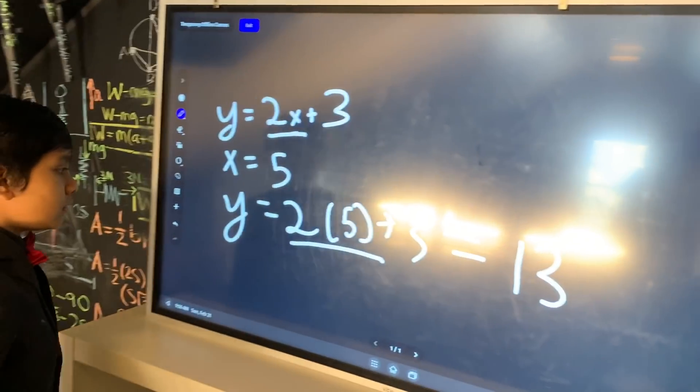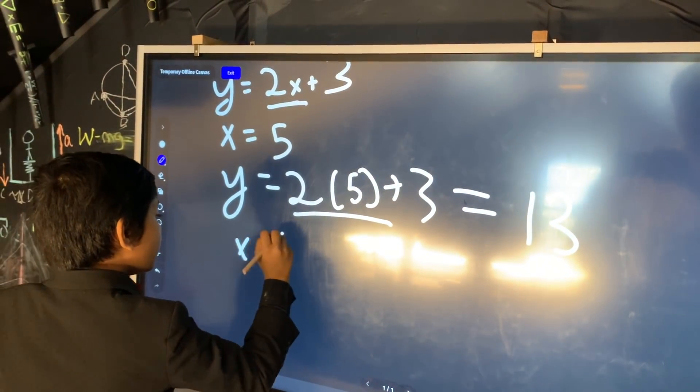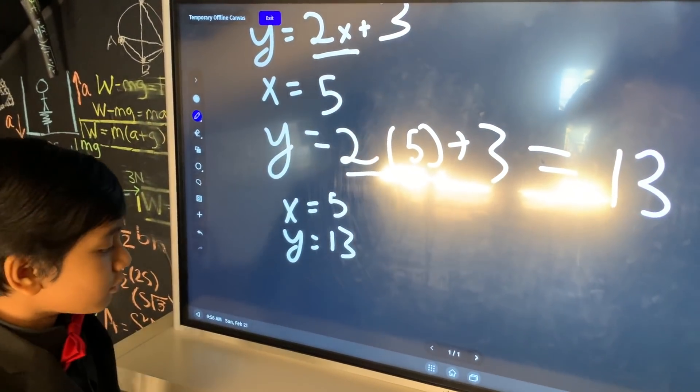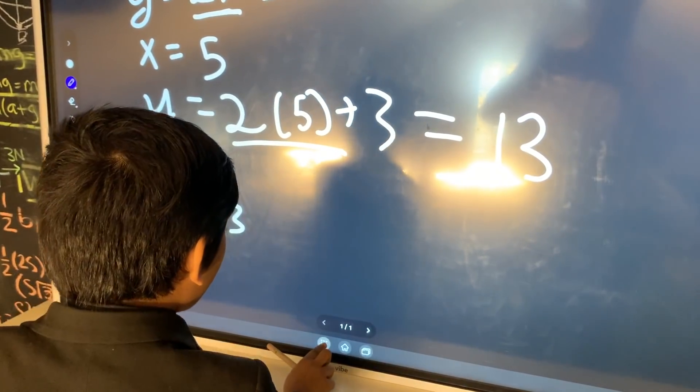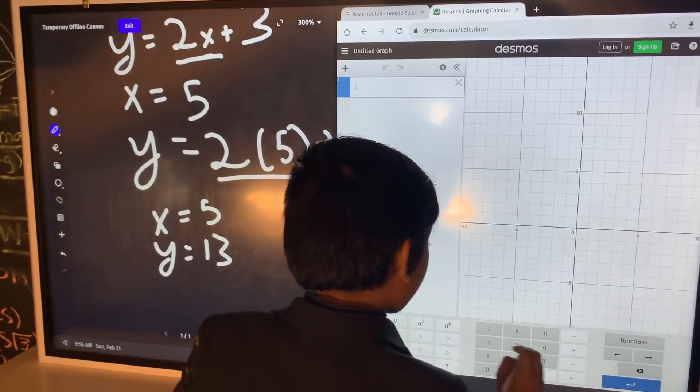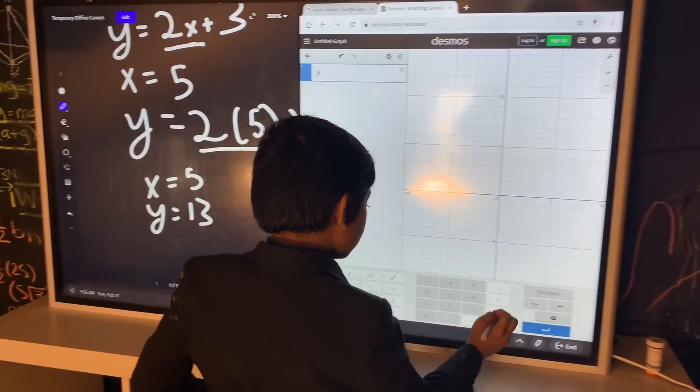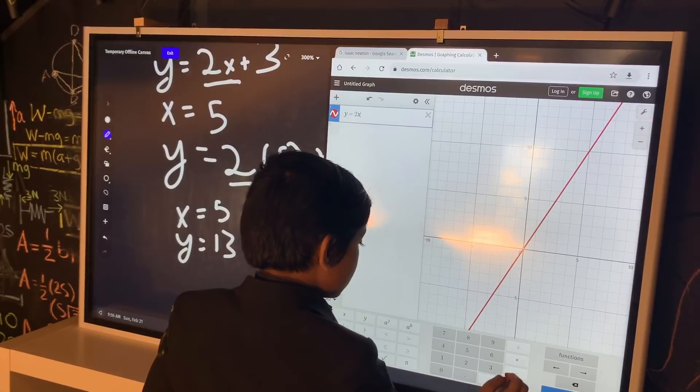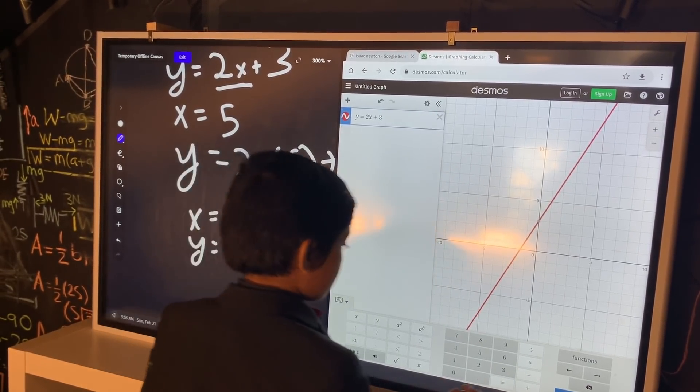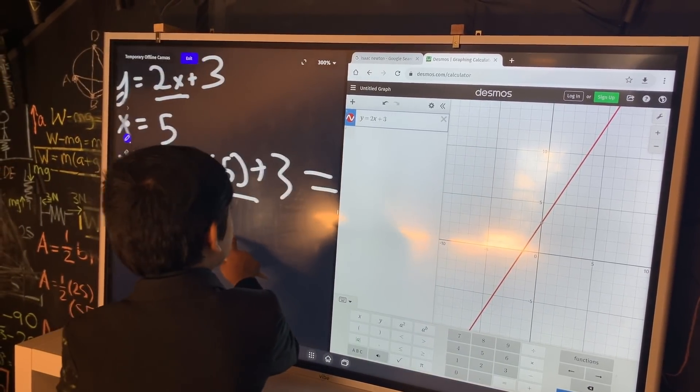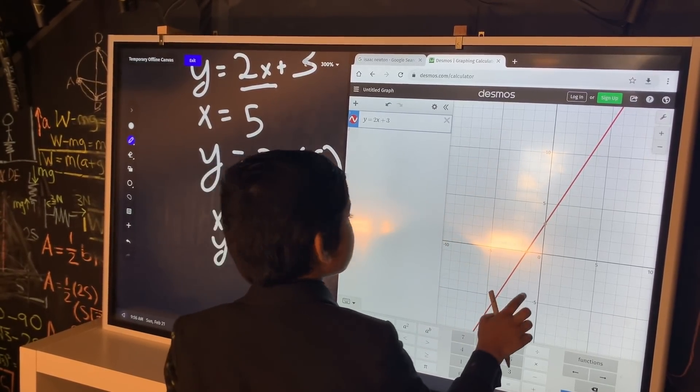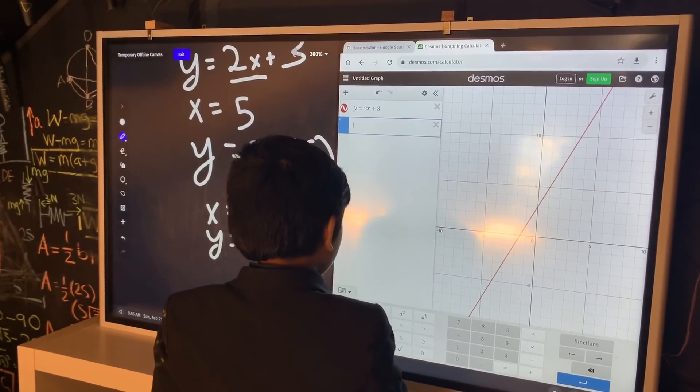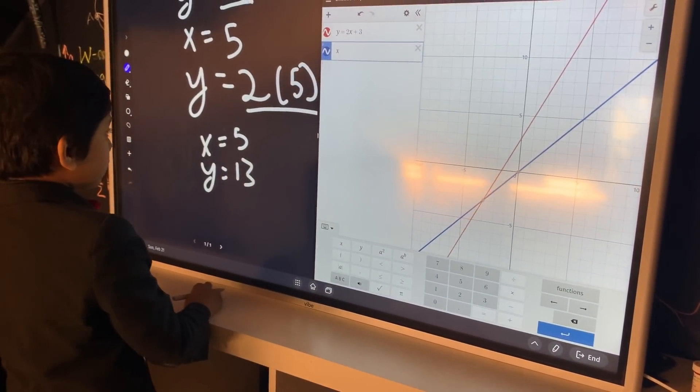So, now when x is 5, y is 13. We can illustrate this by graphing it. Here we go. If we take y is equal to 2x plus 3, right? So, 2x plus 3, yeah. So, now, let's put a line of all coordinates where x is equal to 5.